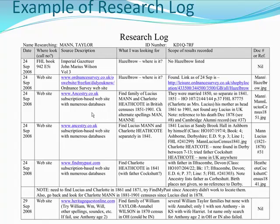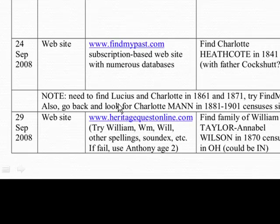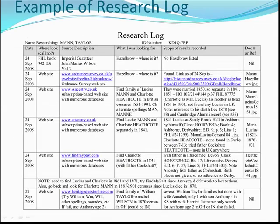If you come down here, you can see they found some notes. Right here it says: 'Need to find Lucius and Charlotte in 1861 and 1871.' You want to write yourself notes as you go along so that you don't have to guess what you were thinking. It's important with research logs — sometimes you don't pick it up for six months and all of a sudden you look at it and think, 'I'm not quite sure where I was heading with that,' and you start all over again. So that's why a research log and writing notes, any kind of notes to yourself, is very important.